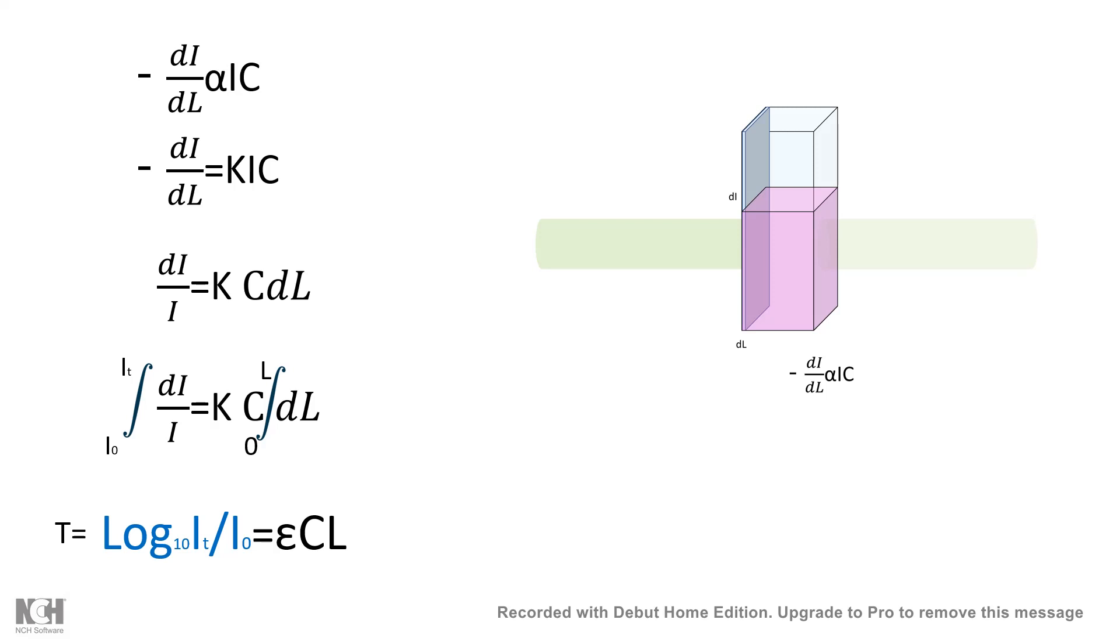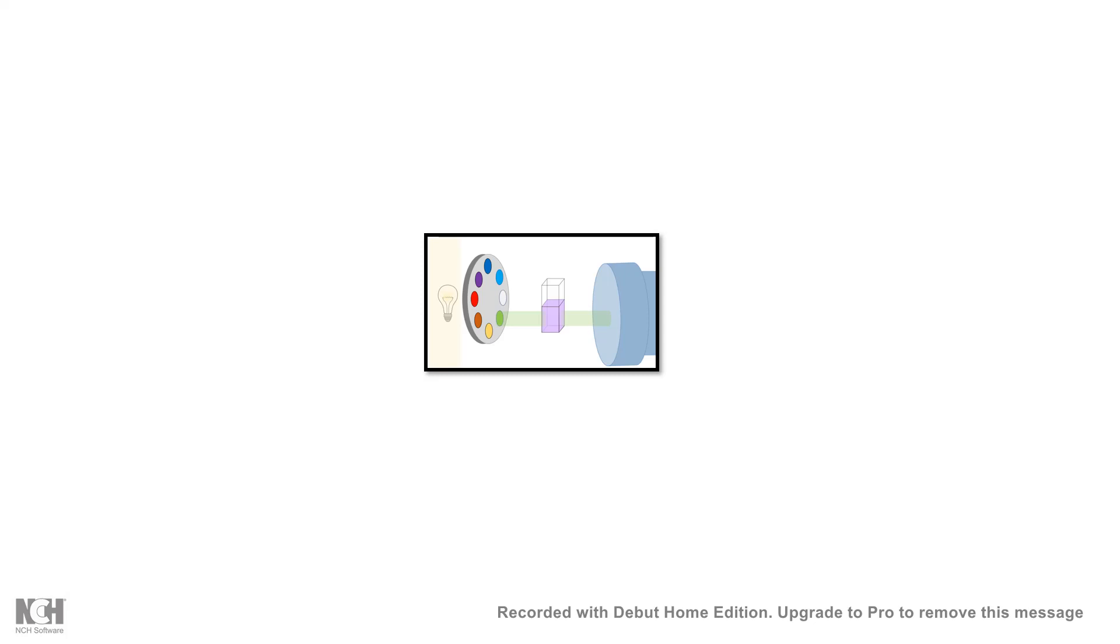Now by definition, this log ratio is known as transmittance, and an inverse of transmittance is known as absorbance. Absorbance is given by epsilon CL. So that is the Beer-Lambert law, and now we understand physically how concentration and the path length is related and why it is related with the absorbance.